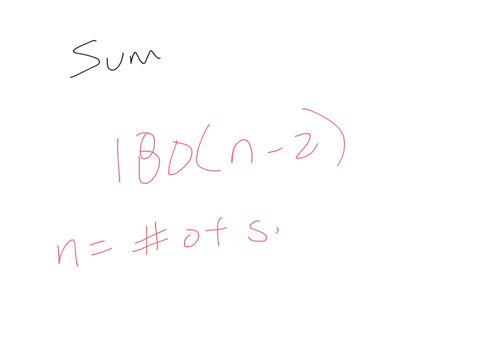The sum of the angles in a regular polygon looks like the following. There's a formula for the sum, and that would be 180 times n minus 2, where n is the number of sides.